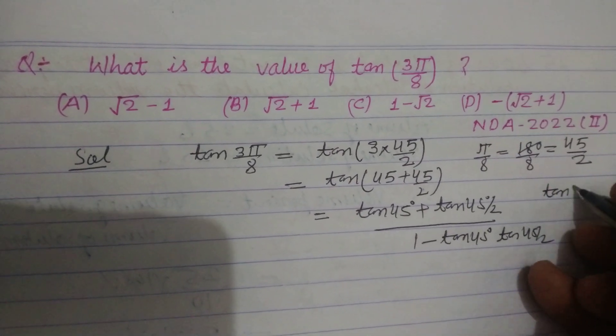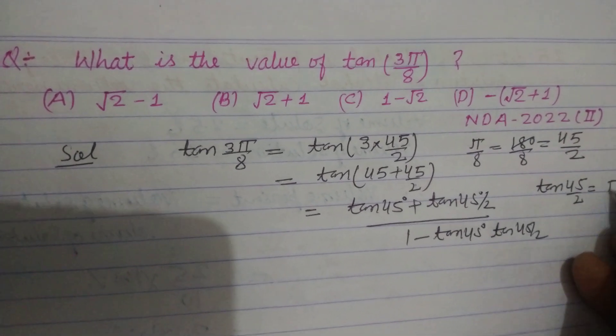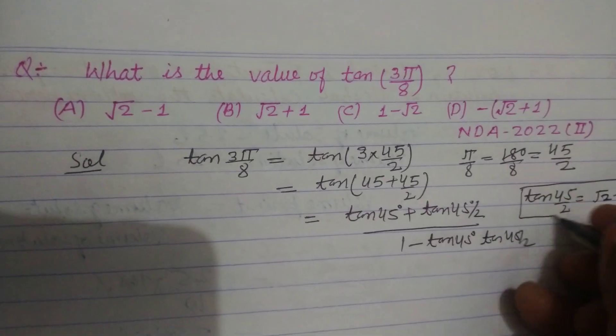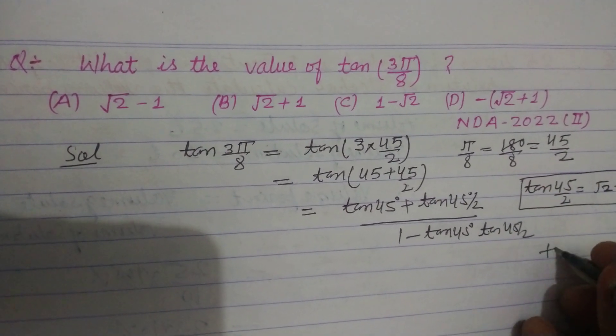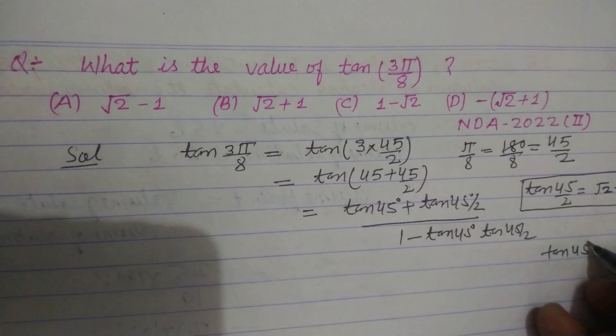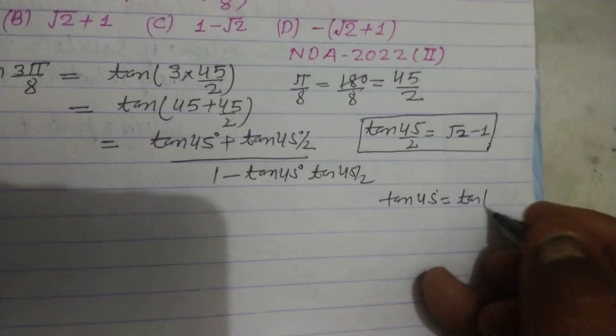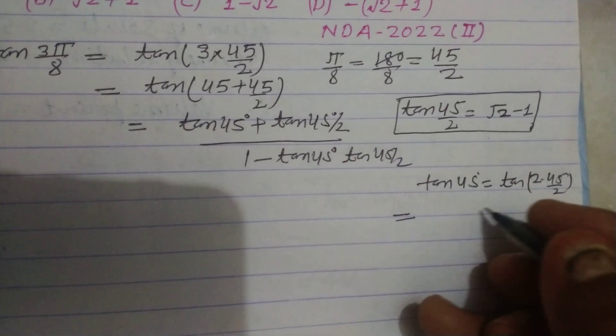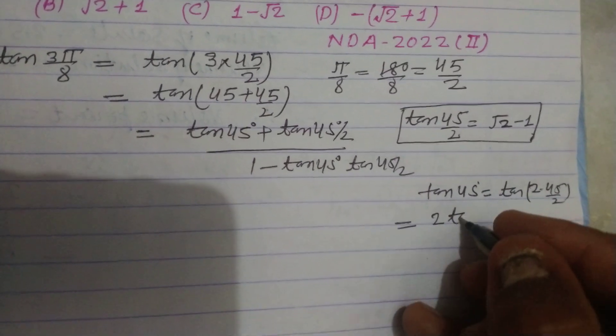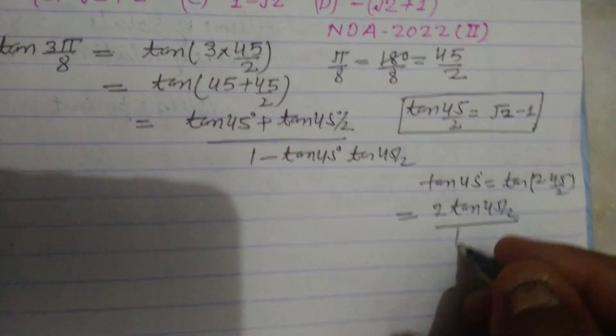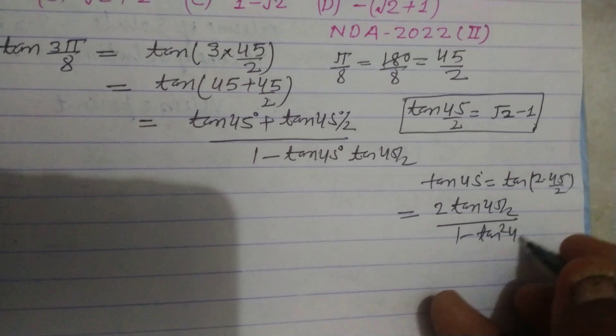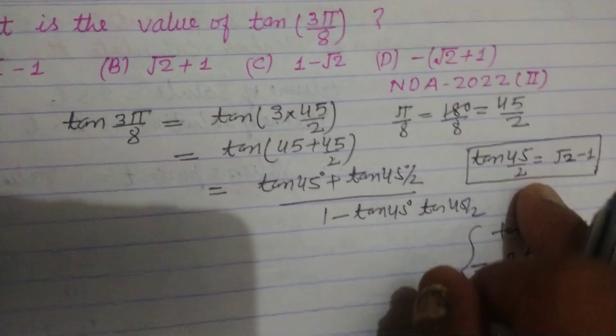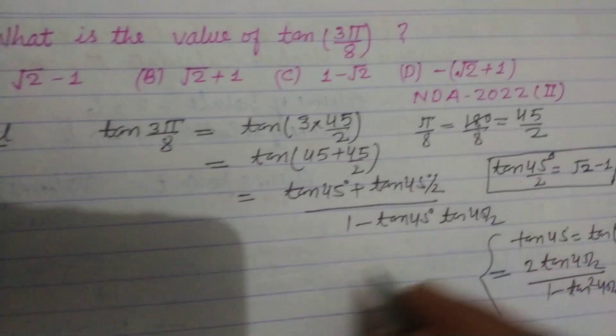You should learn the value of tan(45°/2) which is √2 - 1. You can calculate it by using tan(2θ) = 2tan(θ)/(1 - tan²(θ)), but you should learn by heart that tan(45°/2) equals √2 - 1.